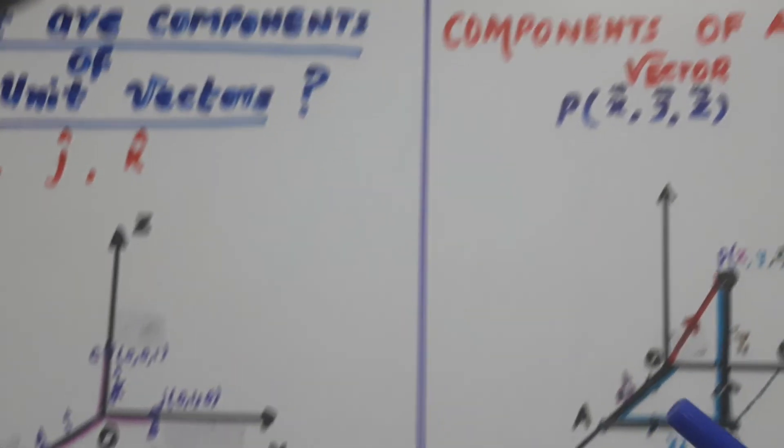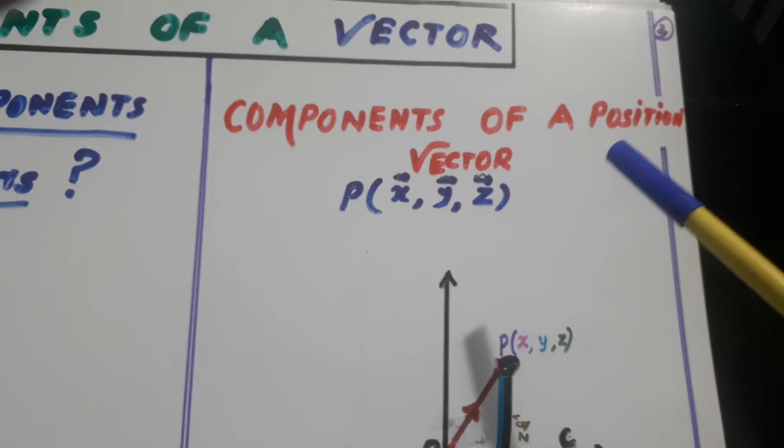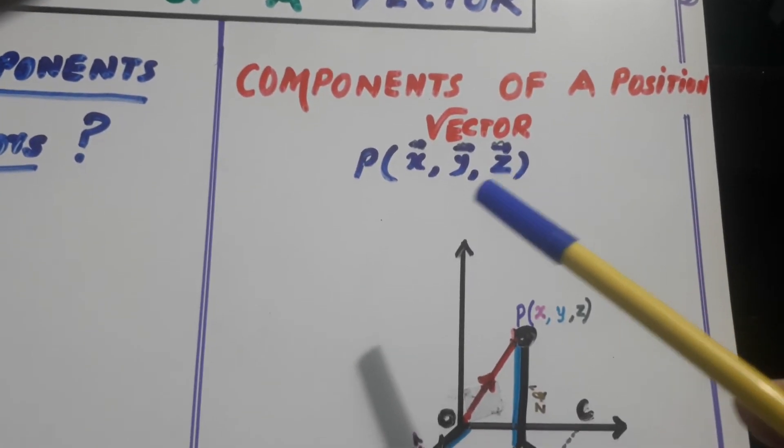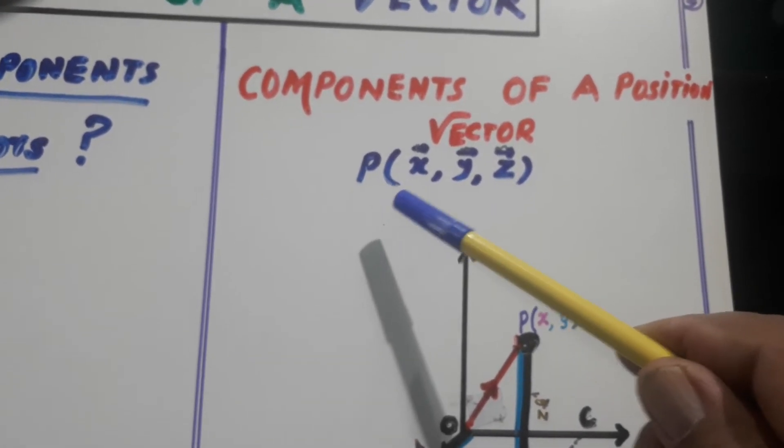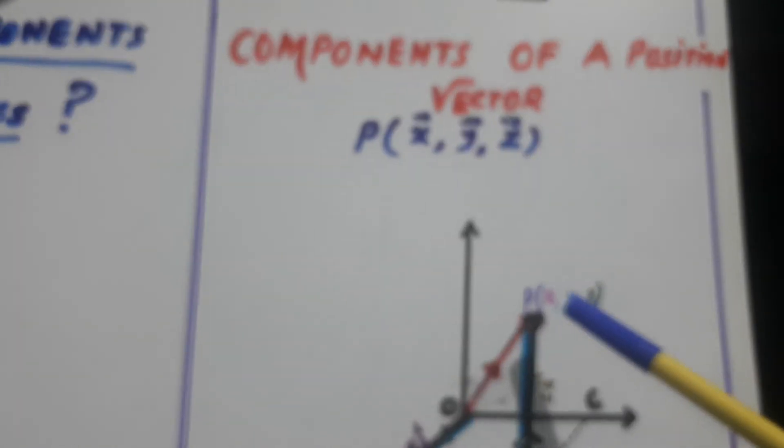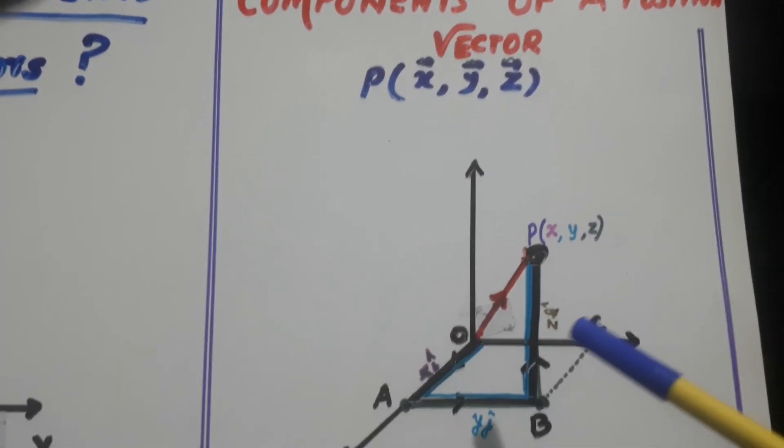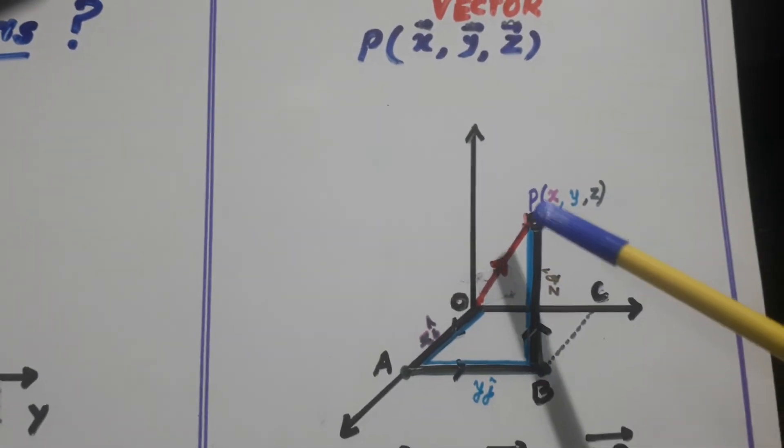Now, look here. Components of a position vector. P is a position vector. This is x, y, z. Now this is the point P.